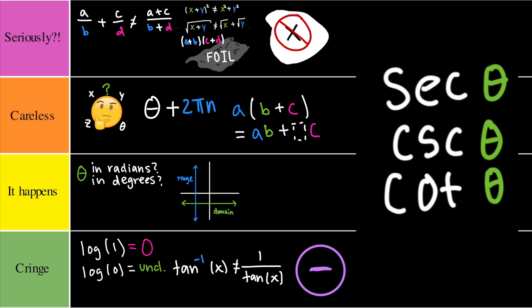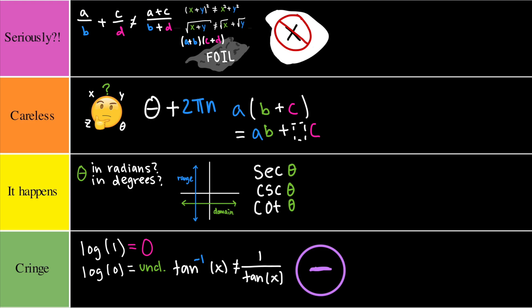Secant, cosecant, and cotangent. Now this one I would have to put in it happens tier, simply because these are misleading names. Secant refers to 1 over cosine, whereas cosecant represents 1 over sine, and cotangent represents 1 over tangent, the cotangent being the one that makes the most sense. Division by 0, just don't. Seriously tier.